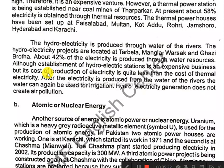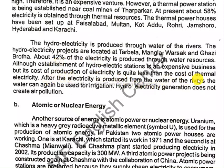The cost of production of hydroelectricity is very low, while the thermal electricity station is expensive to set up. After electricity is produced from the water of the river, the water can again be used for irrigation. Hydroelectricity generation does not create air pollution.